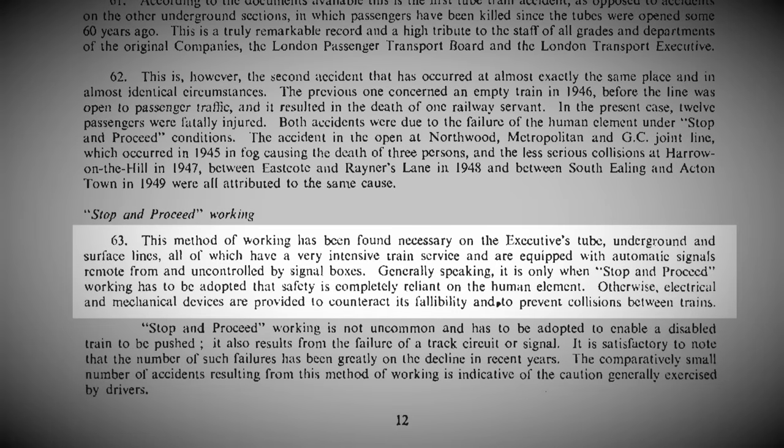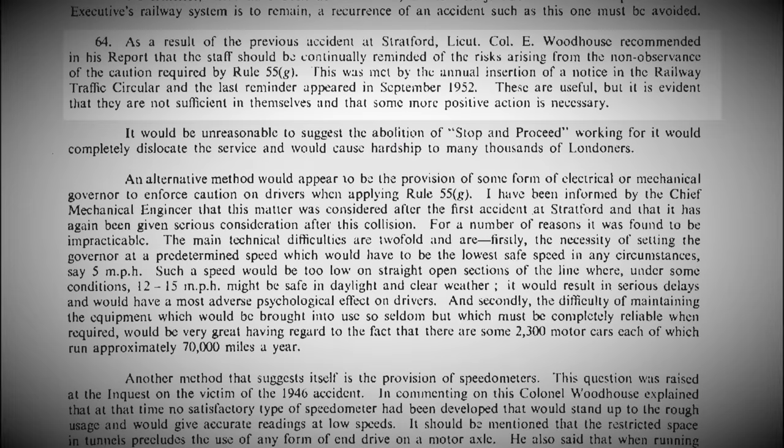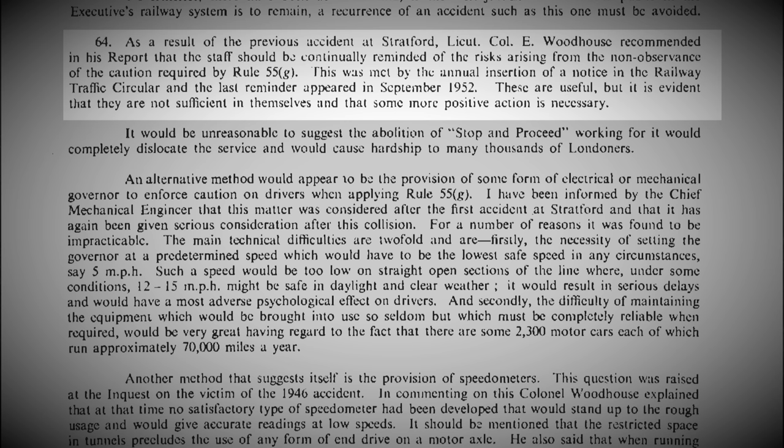The main issue was that the procedure of passing a signal and proceeding at caution solely relied on the driver, and we know that this isn't always the safest option. Even the report into the disaster would state this. This method of working has been found necessary on the executive's tube, underground, and surface lines, all of which have a very intensive train service and are equipped with automatic signals, remote from and uncontrolled by signal boxes. Generally speaking, it is only when stop and proceed working has to be adopted that safety is completely reliant on the human element. Otherwise, electrical and mechanical devices are provided to counteract its fallibility, and to prevent collisions between trains. As a result of the previous accident in Stratford, Lieutenant Colonel E. Woodhouse recommended in his report that staff should be continually reminded of the risks arising from the non-observance of the caution required by Rule 55-G. This was met by the annual insertion of a notice in the railway traffic circular, and the last reminder appeared in September 1952. These are useful, but it is evident they are not sufficient in themselves, and that some more positive action is necessary.